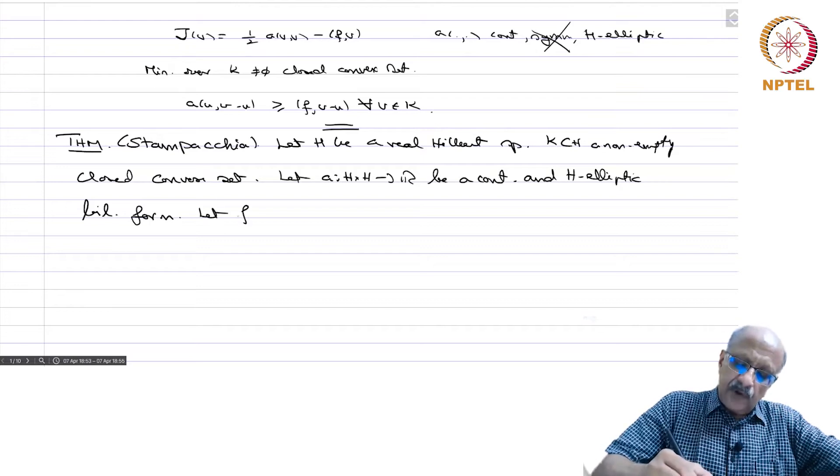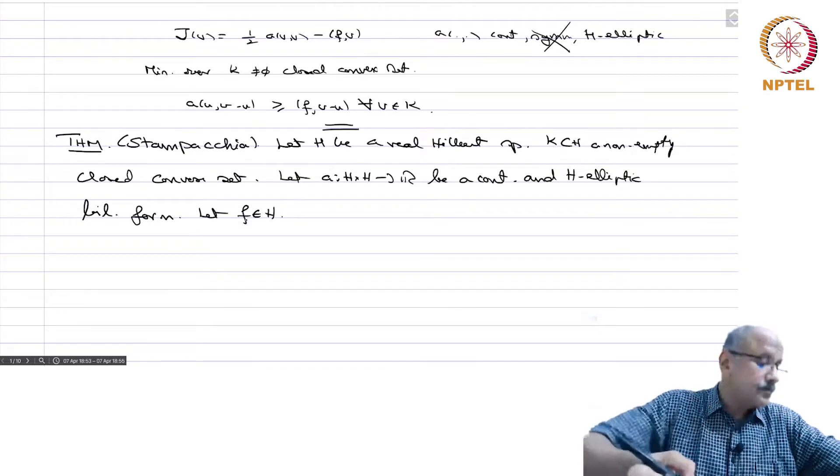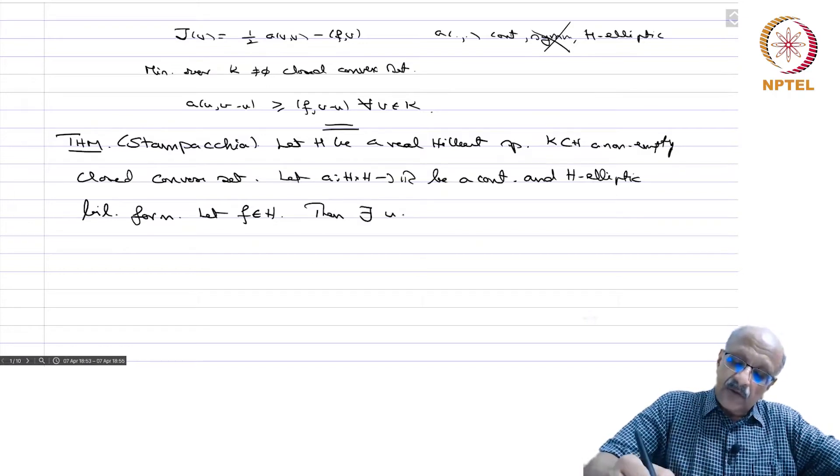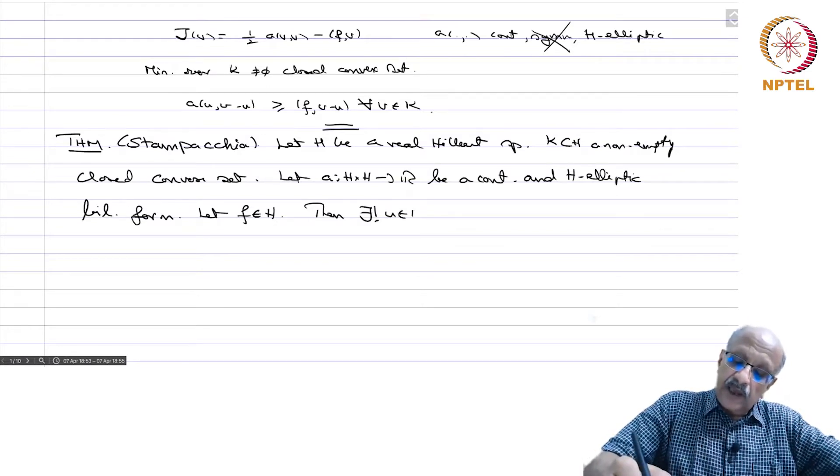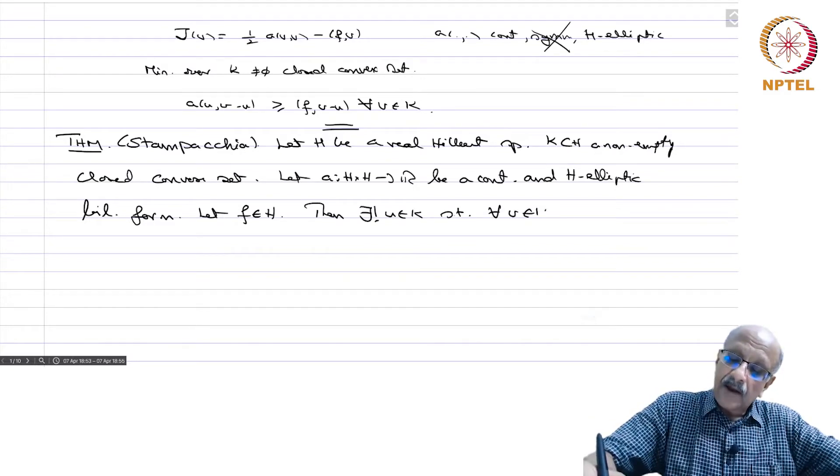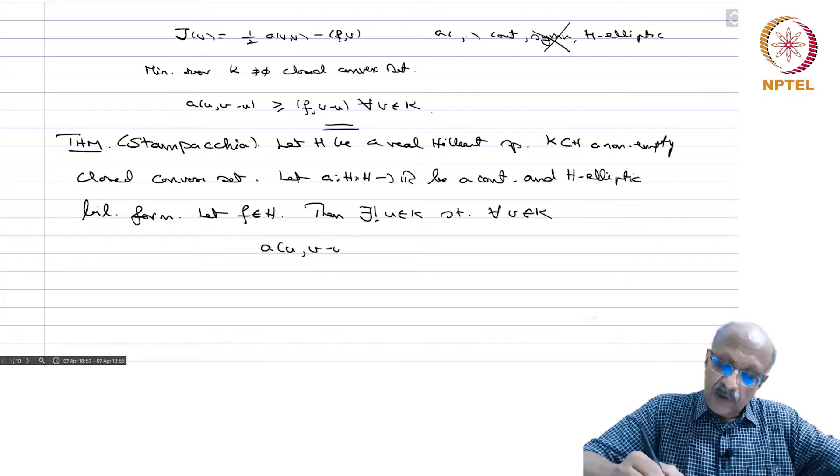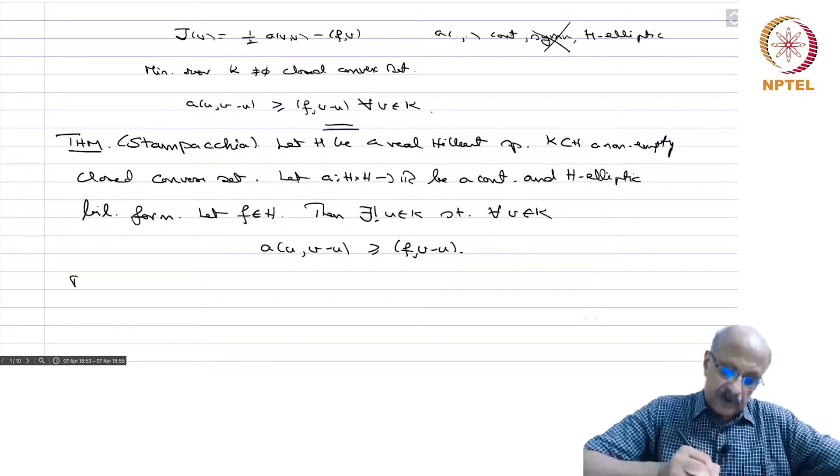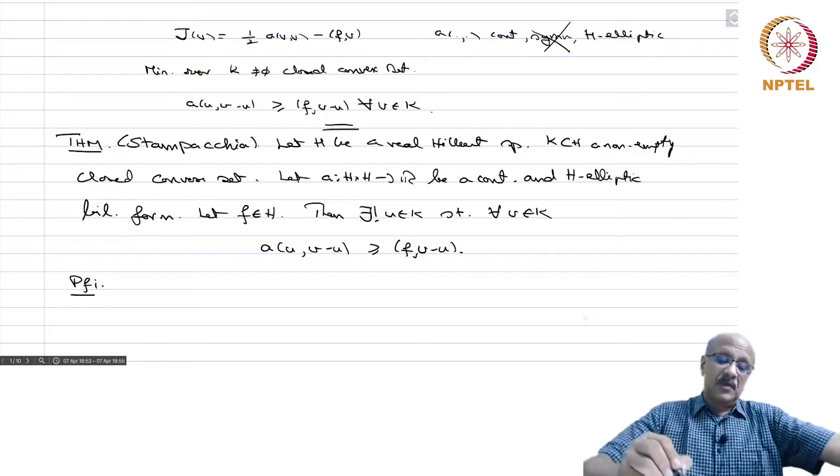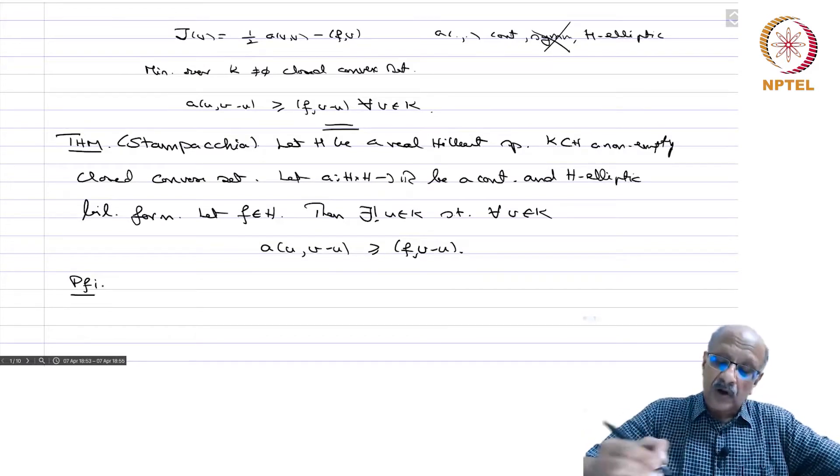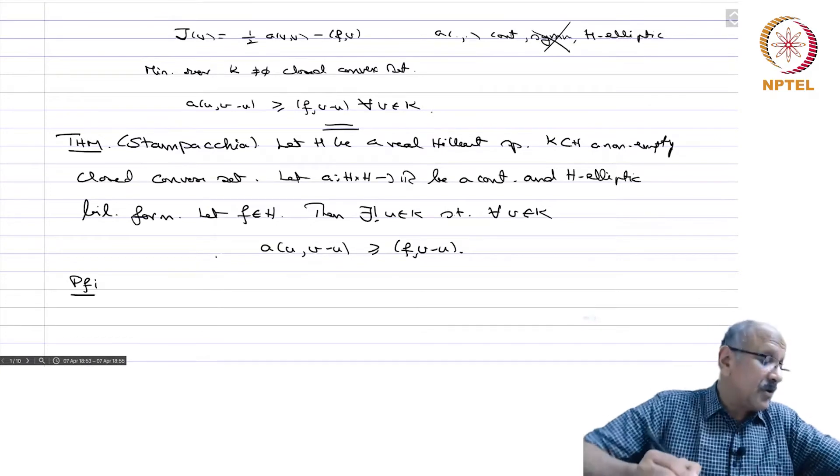Let F belong to H. Then there exists a unique U in K such that for every V in K, you have A(U, v-U) ≥ F(v-U). This is the theorem. We do not need the symmetry, but the price we pay is that this is not the solution of some minimization of energy.